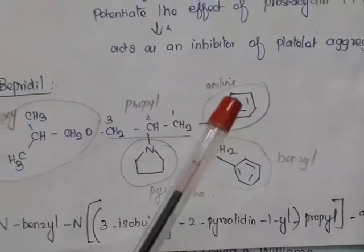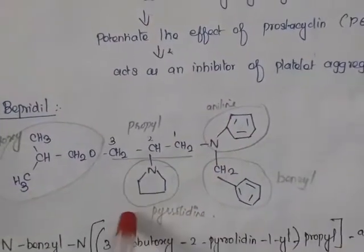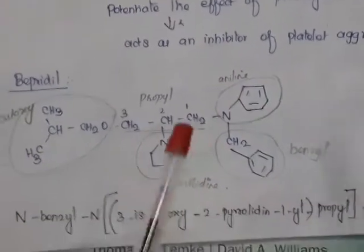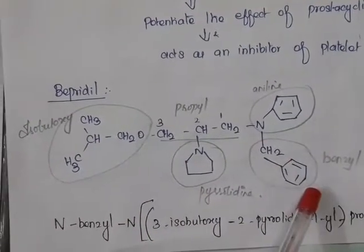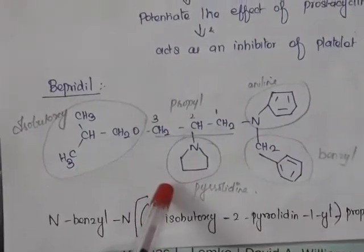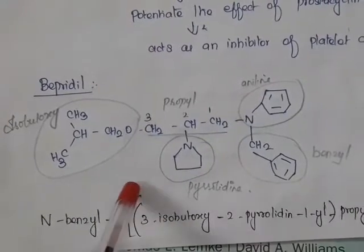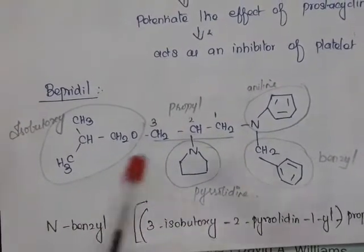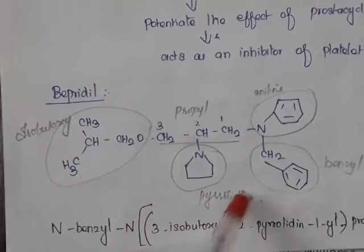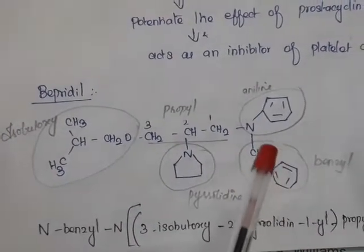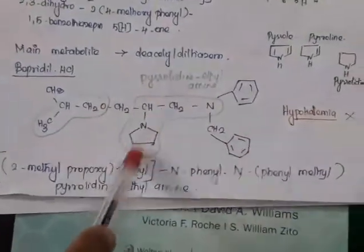Bepridyl is a second-generation alkylamine type calcium channel blocker. In addition to being a calcium channel blocker, it inhibits sodium flow into heart tissue, lengthens cardiac repolarization, and causes bradycardia. The main caution is that it should not be given in patients with hypokalemia. It is used only in the treatment of stable angina.